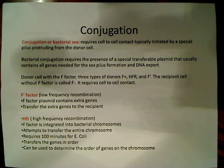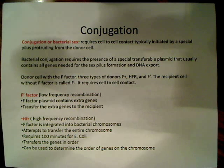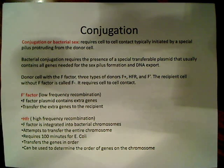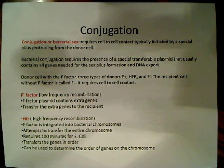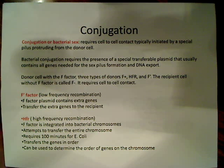This F-factor plasmid has all the necessary genes to produce the sex pilus and also to export the DNA. There are three types of donor cells. We call the first one F-plus. We have another one called HFR and one called F-prime.